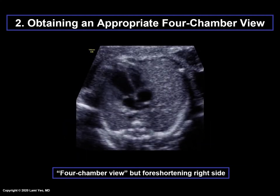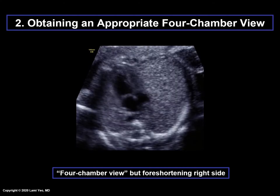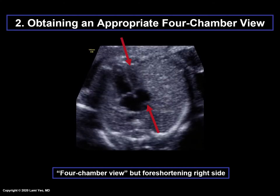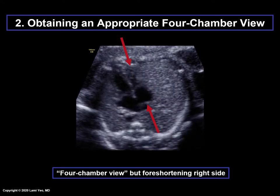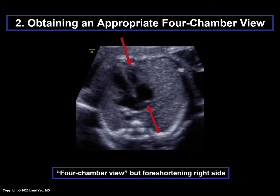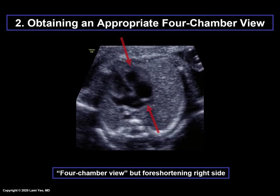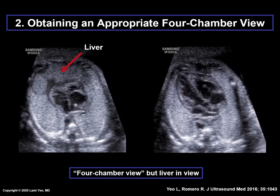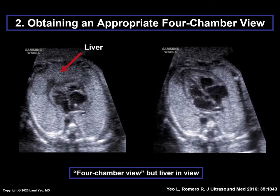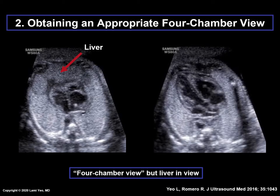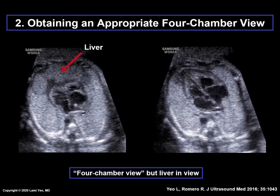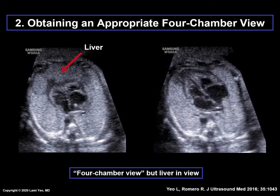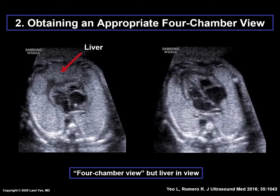For this four-chamber view, the transducer has been tilted so that there is foreshortening of the right side of the heart. If any portion of the fetal liver or stomach is seen in the four-chamber view plane, this means that the transverse plane of the fetal chest is actually oblique and should be corrected by tilting and readjusting the probe.